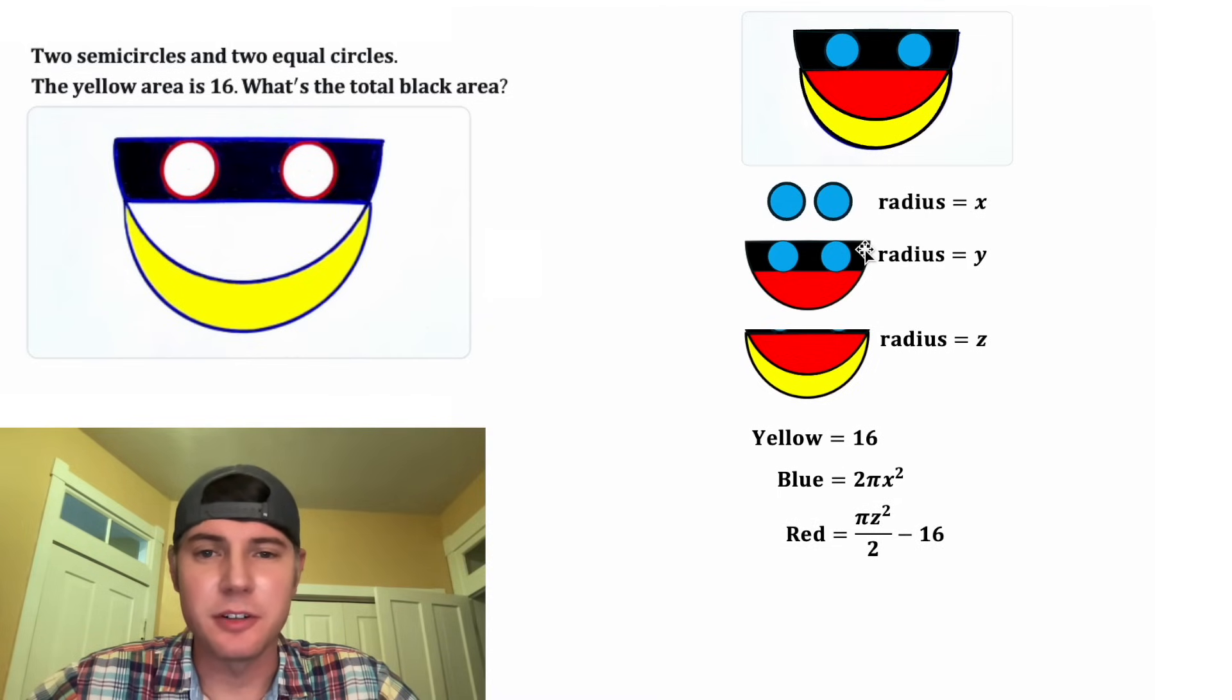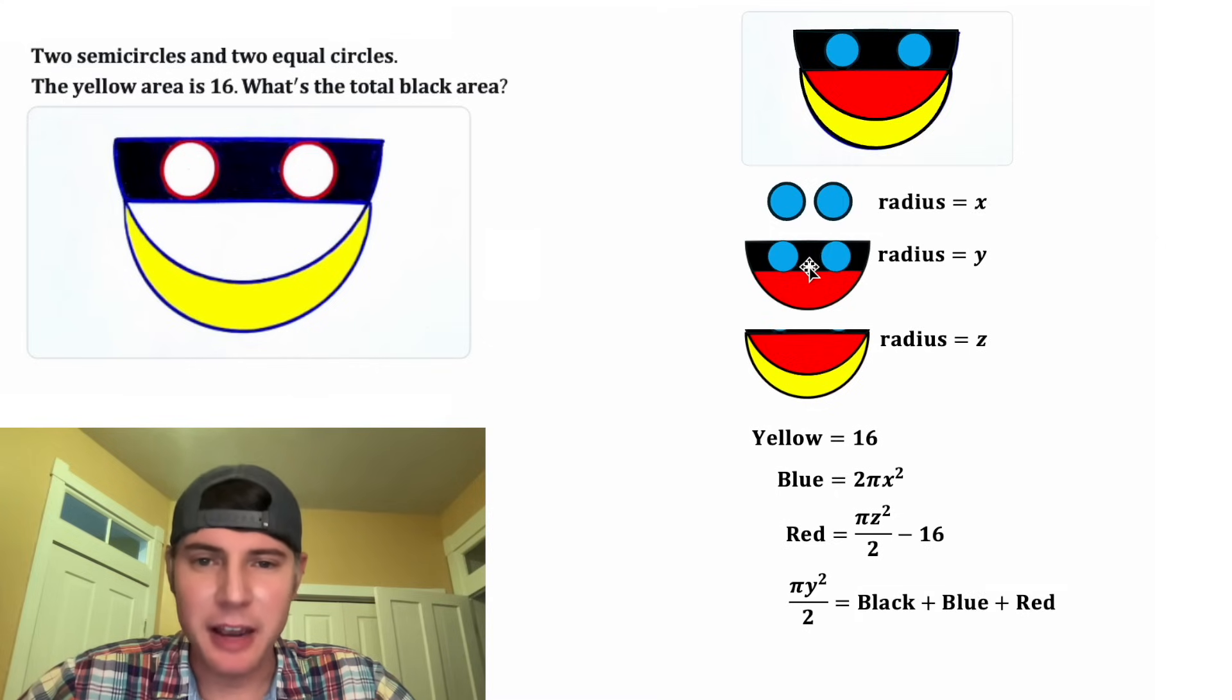And last, let's do this middle semi-circle. It's gonna be pi Y squared divided by two. And that's gonna be equal to the black region plus the blue region plus the red region.